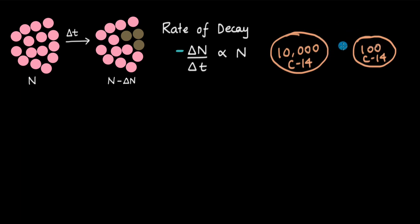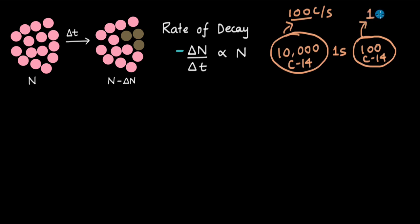After one second, suppose 100 carbon atoms undergo radioactive decay from the first group. These are random numbers used just for intuition. The second group has only 100 carbon-14 atoms — one hundredth of the first group. So for every 100 atoms decaying in the large group, we'd expect only one carbon atom decaying per second from the small group. Delta n by delta t is much less for the smaller sample.